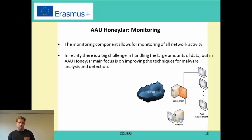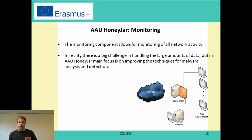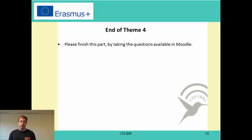For the monitoring component, it allows monitoring of all network activity. One of the big challenges is handling the large amount of data. In AAU HoneyGuard the test setup is relatively small and manageable, but in a large ISP network with several gigabits of data there are significant challenges in handling, storing, and processing the data — including extracting it from a router without affecting routing performance.